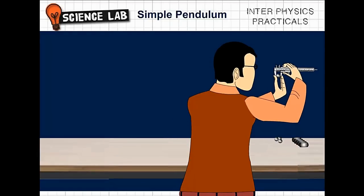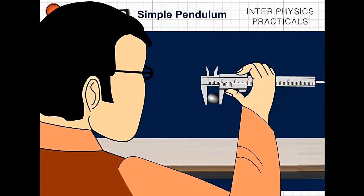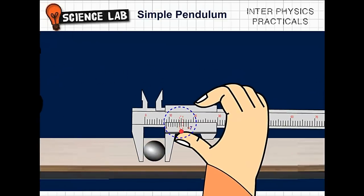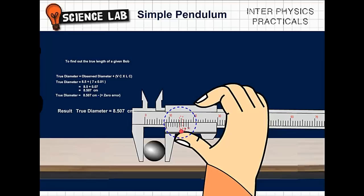Place the bob between the outside jaws of the vernier calipers. The 7th line on the vernier coincides with the main scale. Hence, vernier coincidence VC is 7.